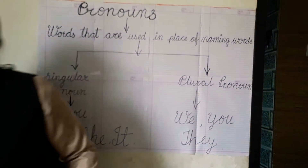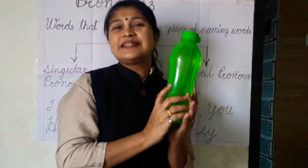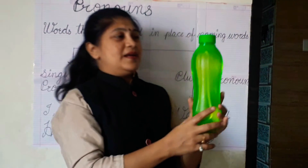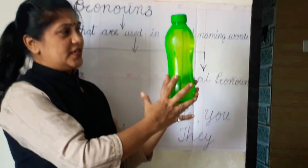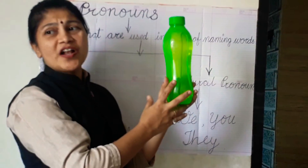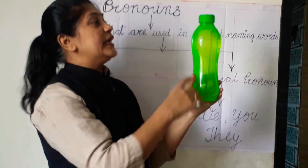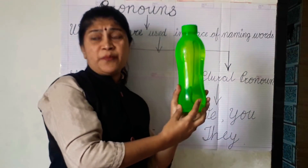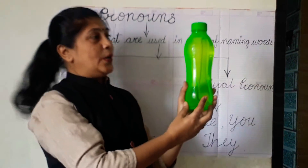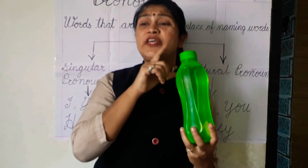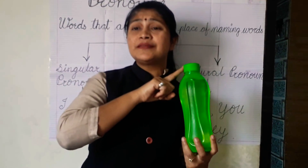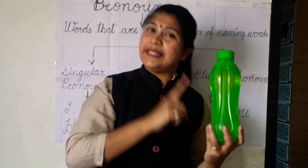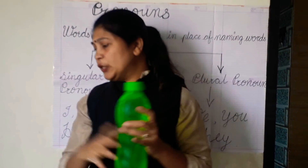What is this? This is a bottle. It is full of water. It is green in color. It is a big bottle. Which pronoun we use for the bottle? It. Very good.